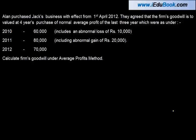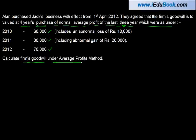Alan purchased Jack's business with effect from 1st April 2012. They agreed that the firm's goodwill is to be valued at 4 years purchase of normal average profit of the last 3 years, which were: 2010 — 60,000; 80,000; 70,000. Calculate the firm's goodwill under the average profits method. The profits for 2010 and 2011 are given to be including an abnormal loss of 10,000 and an abnormal gain of 20,000.